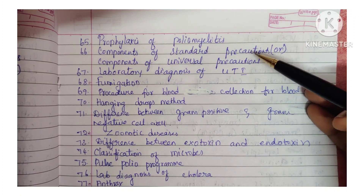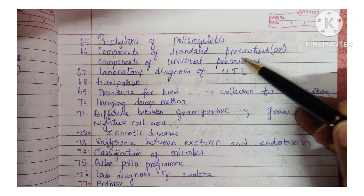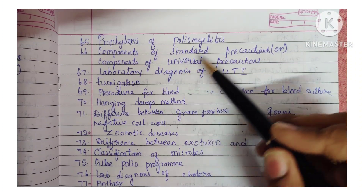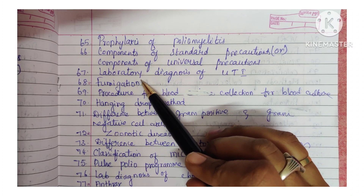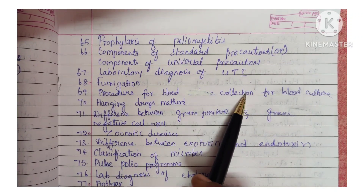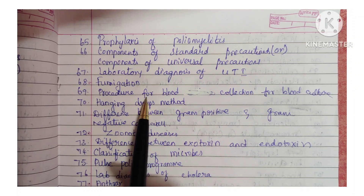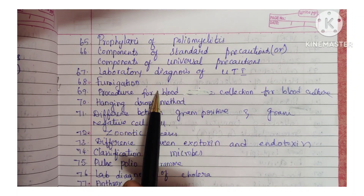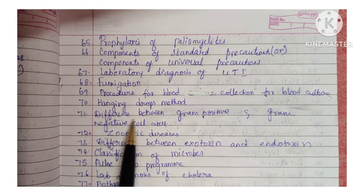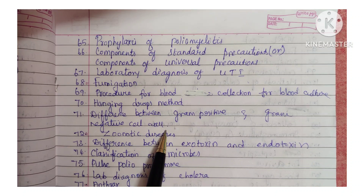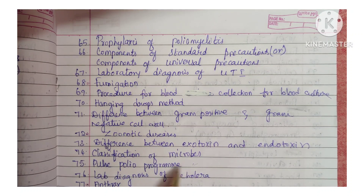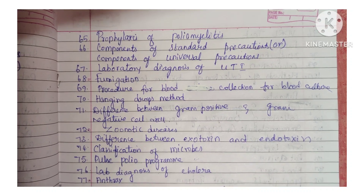Next: prophylaxis of poliomyelitis. Components of standard precautions or components of universal precautions — they can ask as standard precautions, standard biosafety precautions, or universal precautions; all are the same. Laboratory diagnosis of UTI (urinary tract infection). Fumigation. Procedure for blood collection for blood culture. Hanging drop method. Differentiate between gram positive and gram negative cell wall. Zoonotic diseases. Difference between endotoxin and exotoxin. Classification of microbes. Pulse polio program. Laboratory diagnosis of cholera.